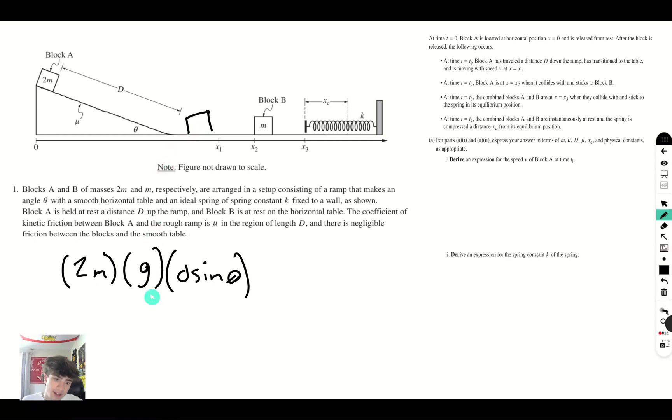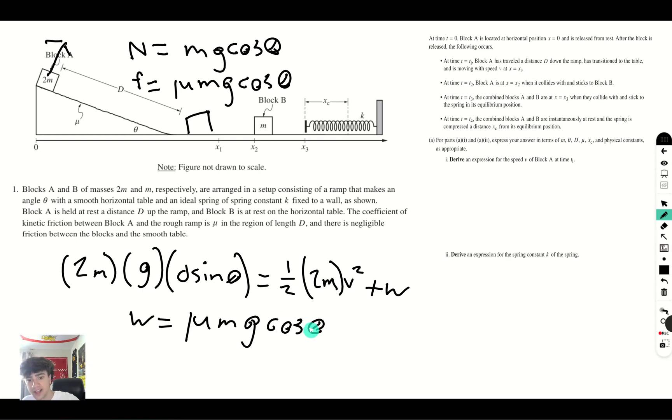Once it reaches the bottom, once it gets to here, all of that energy is going to be converted into kinetic energy. So it will be 1/2 times the mass, which is 2m, times v squared. But some of the energy is also lost due to the friction, and the way we can calculate this is using work. We know that as it's sliding down the ramp, the normal force is going this way. So N is going to be equal to mg cosine theta, meaning that friction is going to be equal to mu mg cosine theta. And that means that the work done plus work is going to be the friction force mu mg cosine theta times the distance that it has affected the block for, which is D.